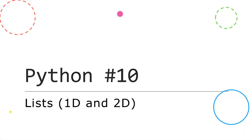In video 10 I want to talk about lists. If you have studied programming in a more theoretical sense, maybe for an exam, you may have come across the term array. Lists are really Python's implementation of arrays, so you can take lists and arrays to be fairly interchangeable. We'll also look at both one-dimensional and two-dimensional lists, which work in the same way as one-dimensional and two-dimensional arrays.